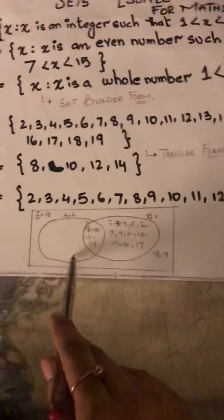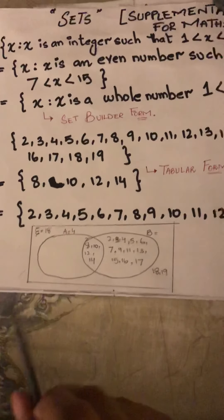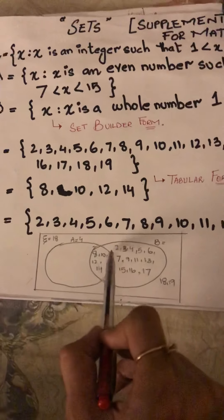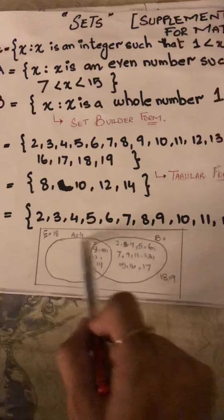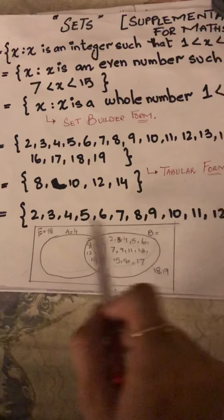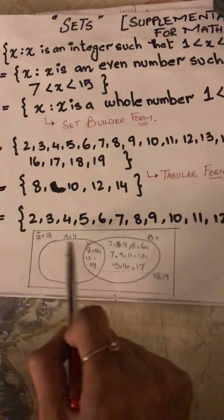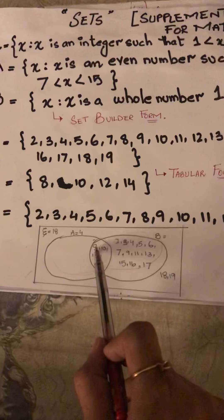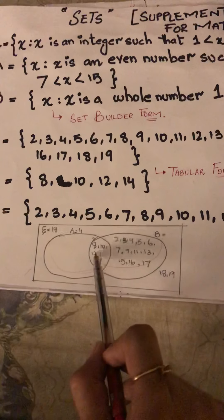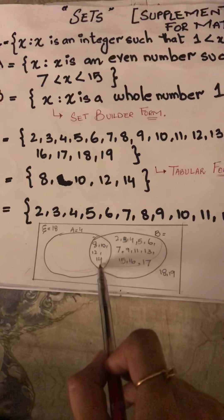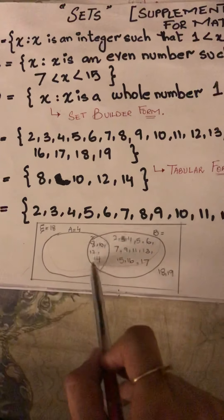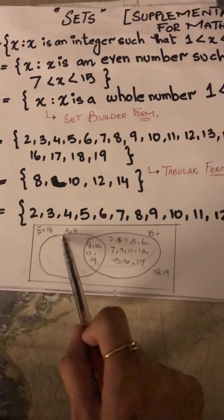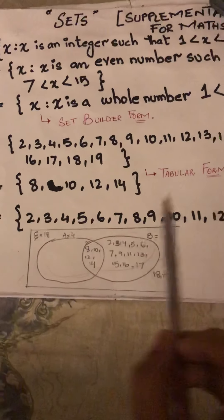I have also created a Venn diagram for your better understanding. It is a 2-set Venn diagram. In the universal set, there is an intersection of A and B. The elements 8, 10, 12, and 14 are part of both set A and set B.